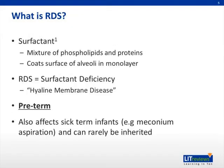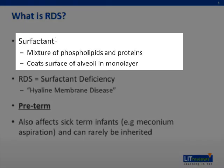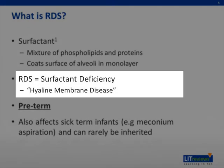So to begin with, what is RDS? A discussion about RDS really needs to begin with surfactant. As a reminder, surfactant is that mixture of lipid and protein that coats your alveoli and helps reduce surface tension. It's important to note that because, at its core, RDS really is based on a surfactant deficiency. This is the reason that, historically, RDS was known as hyaline membrane disease — because when you would look at the pathology of these lungs on cross-section, you could truly see the thickening associated with surfactant deficiency and all of the remodeling that occurs thereafter.